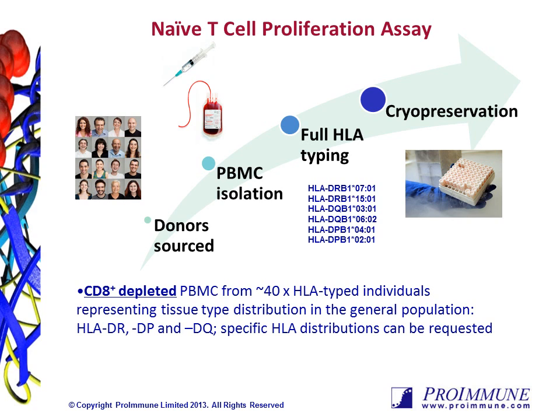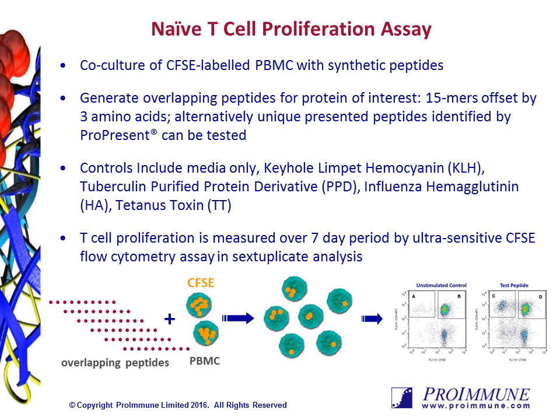We would typically suggest a panel of 20–50 donors that we select from our Proimmune donor cohort. These donors are sourced from the UK NHS Blood and Transplant Service, and the PBMCs are isolated and then cryopreserved. All donors are fully typed for Class II and then selected for each assay to best represent the tissue type distribution in the general population. Of course, if there are specific distributions requested, we can try to accommodate those as well. The donor PBMCs are labeled with CFSE.